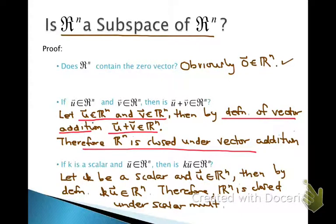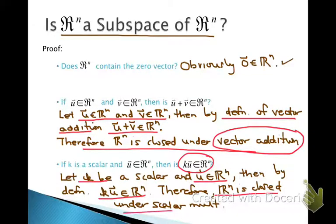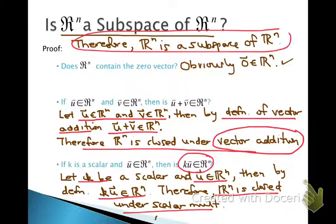Note: the previous statement should say closed under vector addition, not scalar multiplication. For the last property, we show closure under scalar multiplication. Let K be a scalar and U be an arbitrary vector in Rn. Then by definition, scalar multiplication gives something that is in Rn. Therefore Rn is closed under scalar multiplication. Since all three properties hold, Rn is a subspace of Rn.